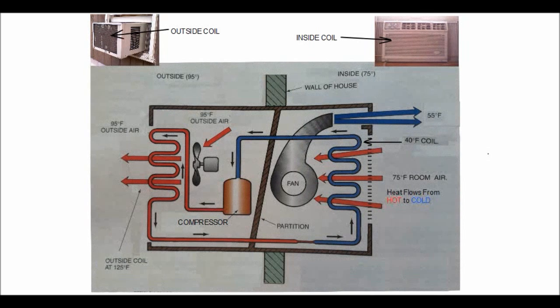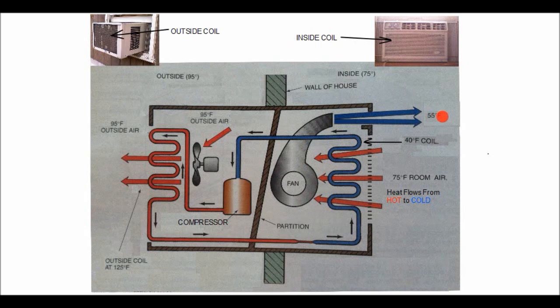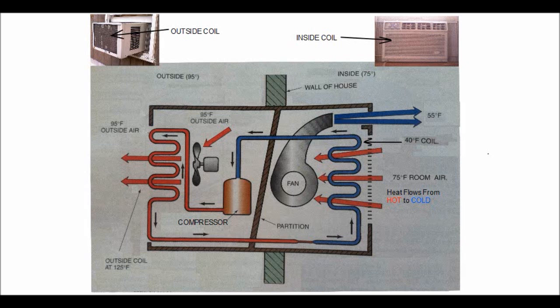So what's happening inside? First of all, we have 75 degree inside room air, and our window unit is blowing out 55 degree air, and that's coming right out of here, out of the top of the indoor unit. So what happens is the 75 degree room air is pulled across the cooling coil.